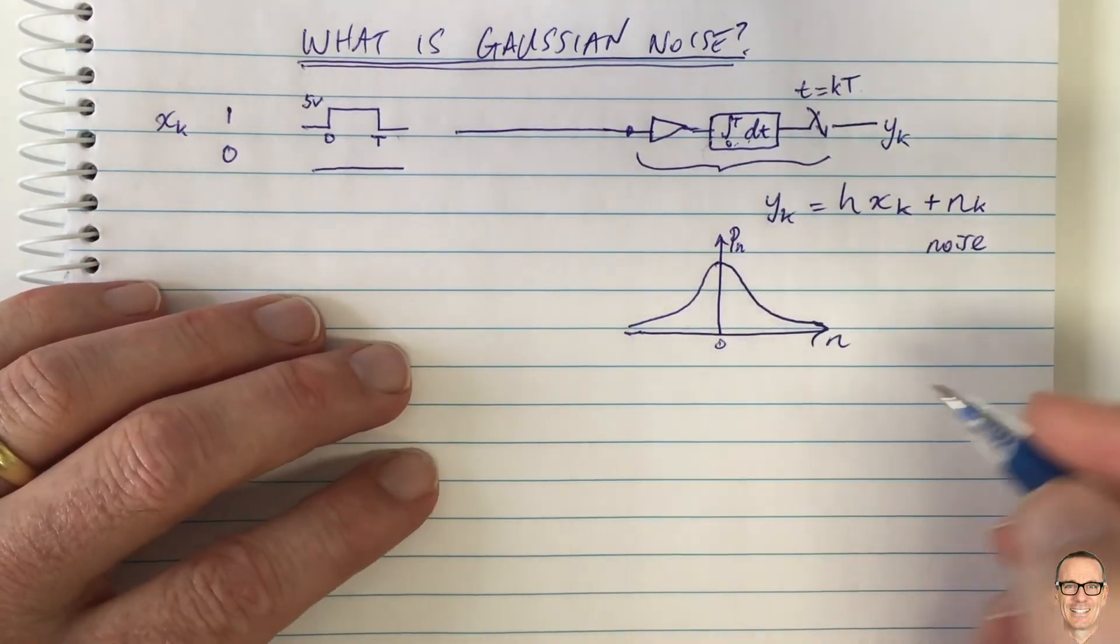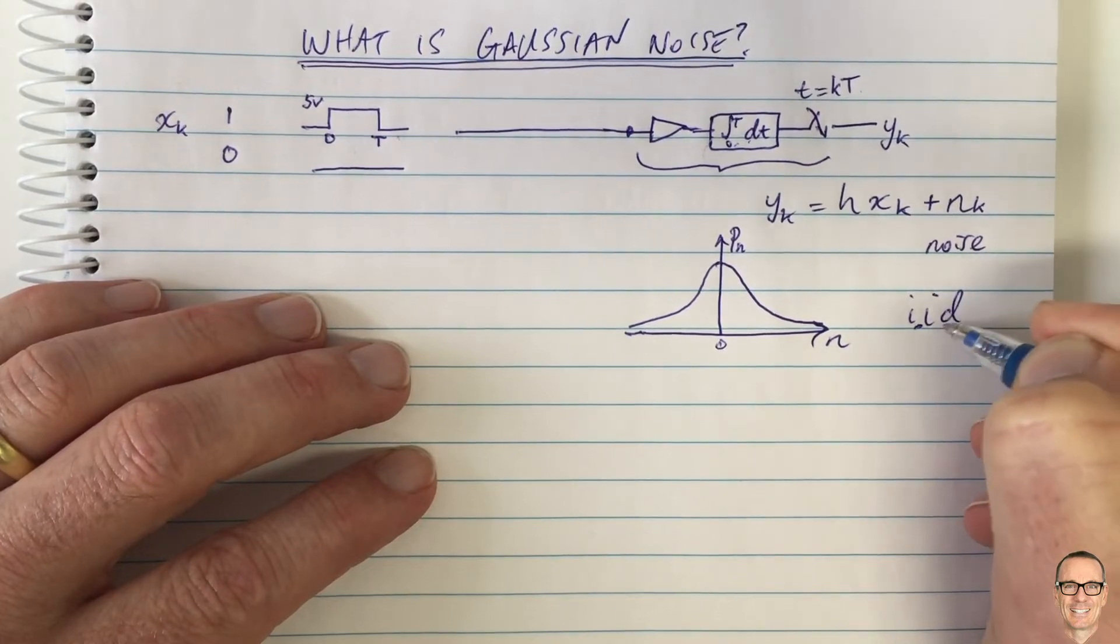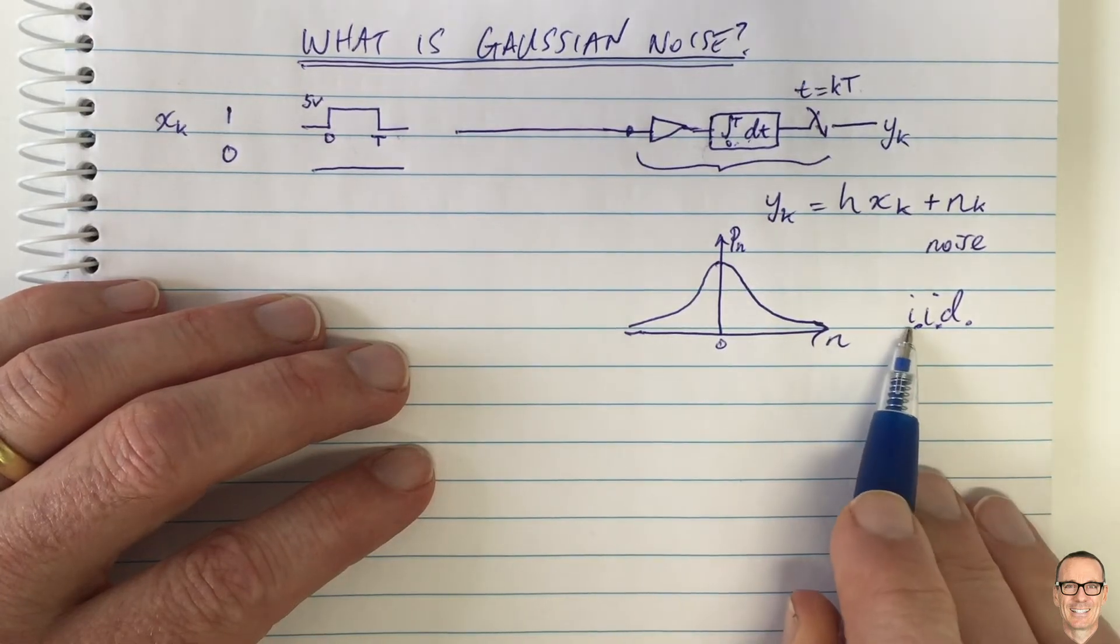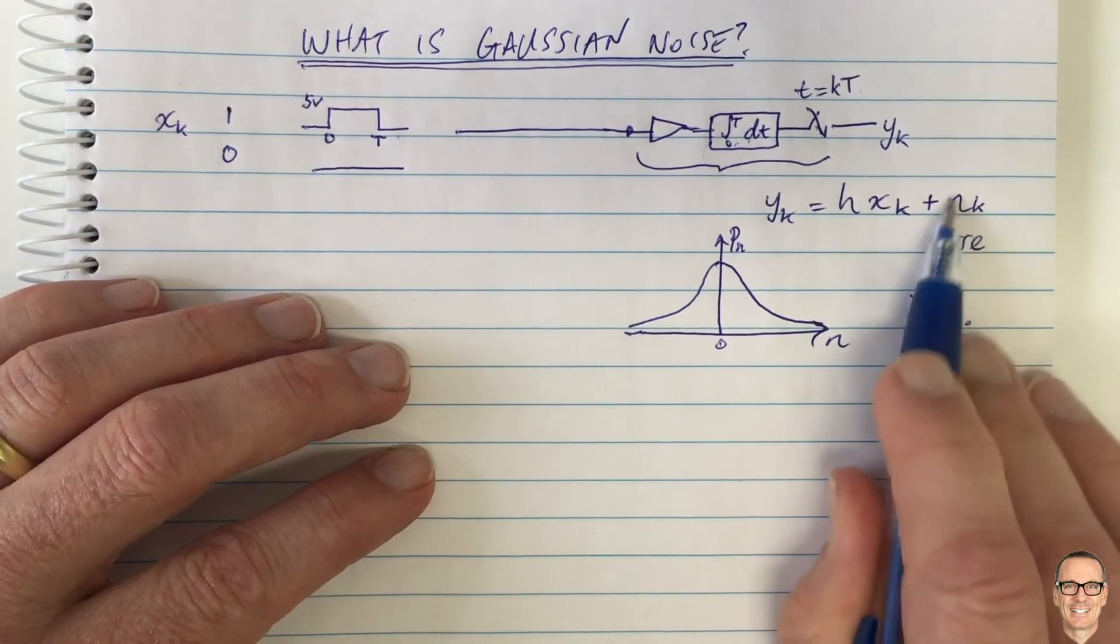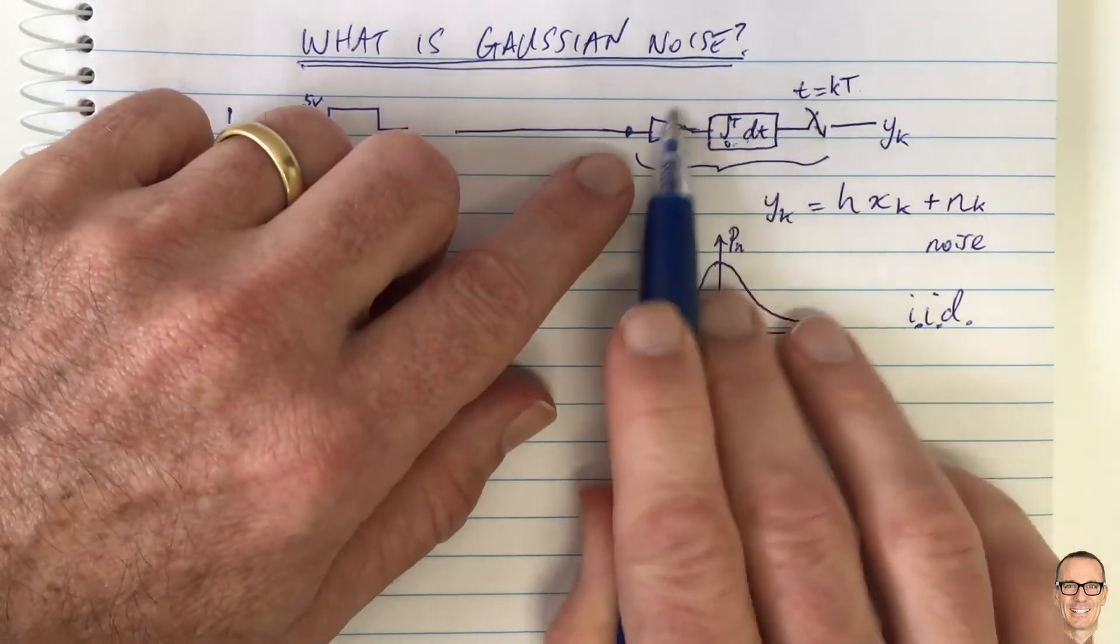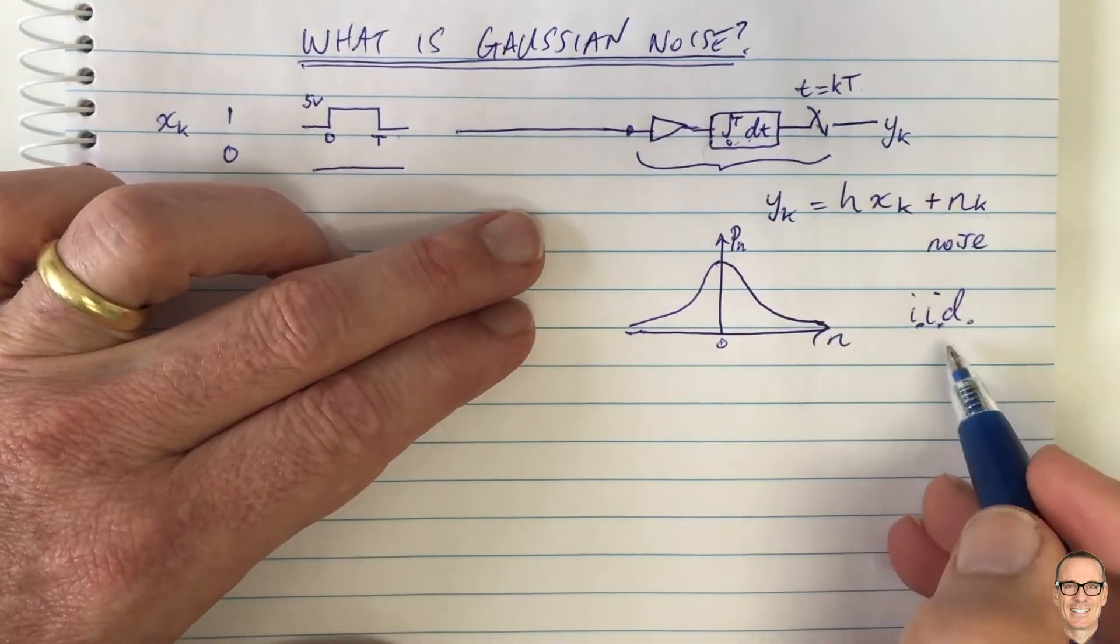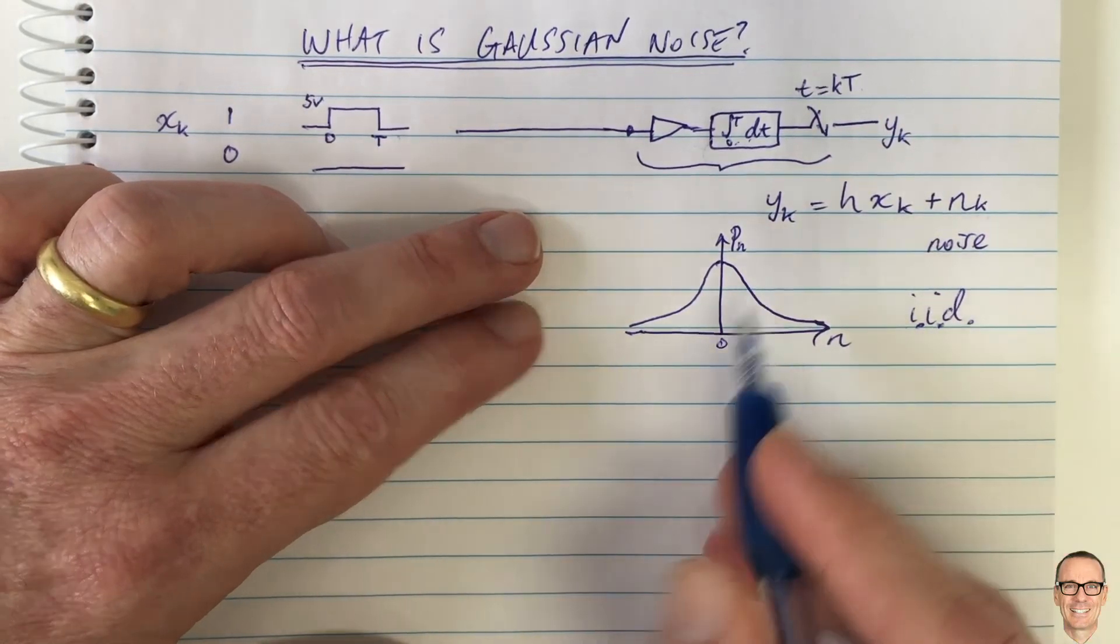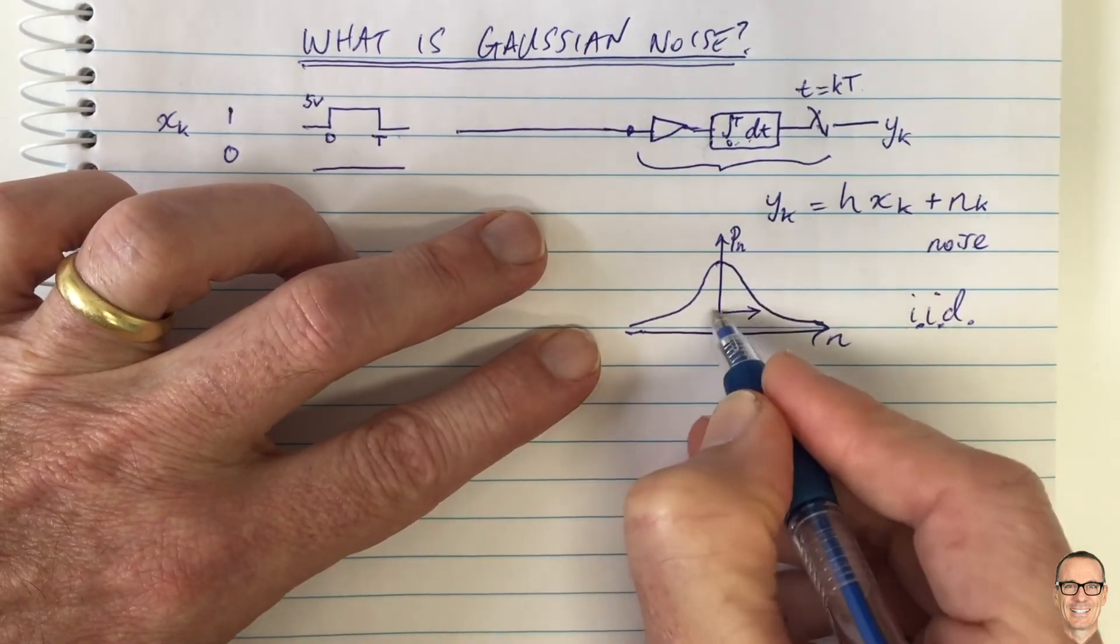There's also one extra step, which is often the case, and it is the case in this, where we also say it's Gaussian IID, which means it's independent. So at every value of k, the noise is independent of all the other values of k. So at every time slot, the noise, the effect of adding up all of these electrons moving around according to heat, is independent for every k and identically distributed. So independent and identically distributed. And that means that they all have the same distribution with the same width of this